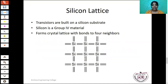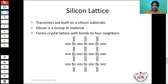In VLSI design, most ICs are fabricated using silicon material because silicon is available in large quantities and is less sensitive to temperature. Transistors are built on a silicon substrate. Other semiconductor materials include germanium, gallium arsenide, etc., but the most widely used is silicon. Silicon is a Group 4 element, meaning it has four valence electrons in its outermost shell.